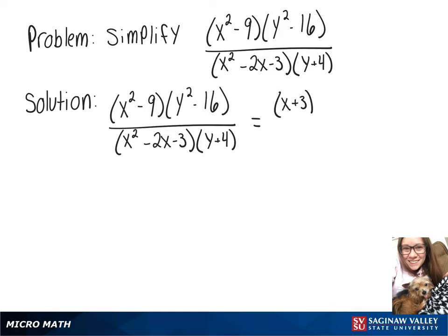On top, we have two differences of squares. The first one will turn into x plus 3 times x minus 3, and the second one will turn into y plus 4 times y minus 4.